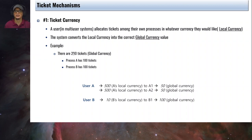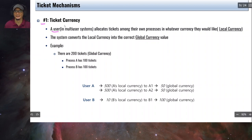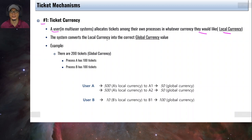With lottery scheduling we can also provide some mechanisms regarding how tickets are processed. The first mechanism is called ticket currency. The idea is that a user in a multi-user system allocates tickets among their own processes in whatever currency they would like — a local currency. The system then converts this local currency to the correct global currency value.